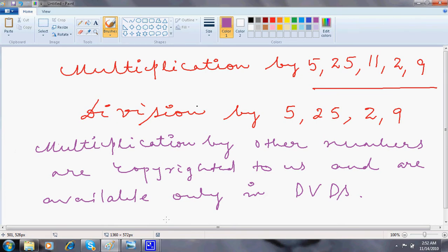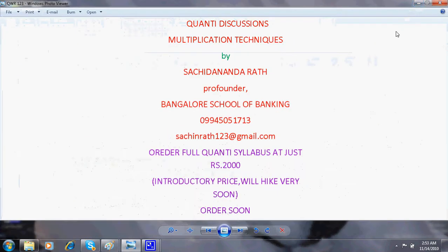These are basically the beginning stages, beginning levels of multiplications, multiplication of other numbers, other big numbers like a triple digit to a triple digit or a double digit to a double digit. The techniques are copyrighted to us and are given only in the DVDs. Techniques that I'm going to discuss are quite rare and the techniques that I'm going to discuss in DVDs are never found in any books or any other material.